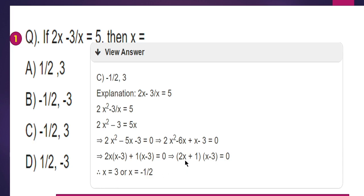At the same time, 2x plus 1 equals 0 gives 2x equals minus 1, so x equals minus 1 by 2. The two solutions are x equals 3 and x equals minus 1 by 2. This is the correct answer.